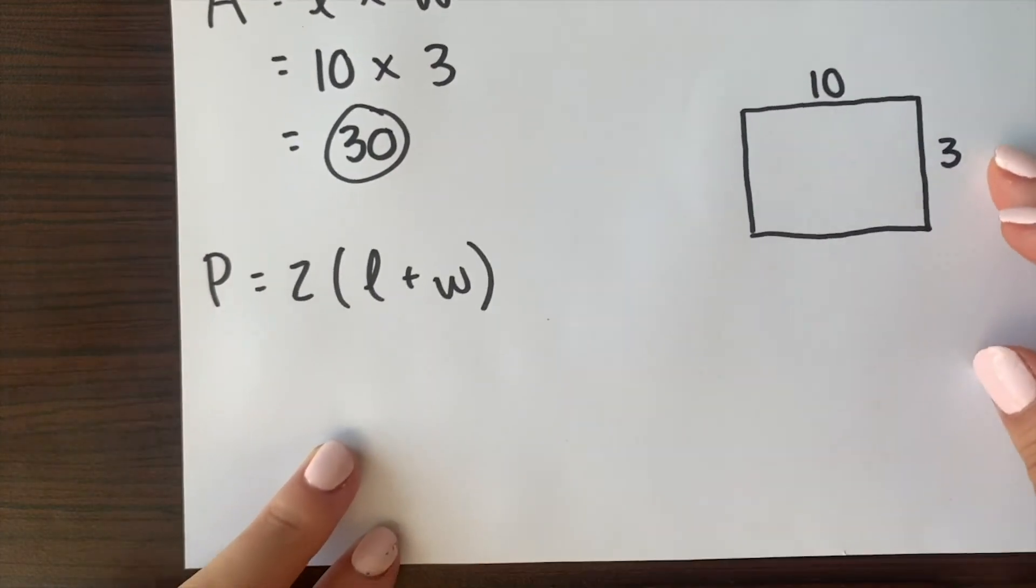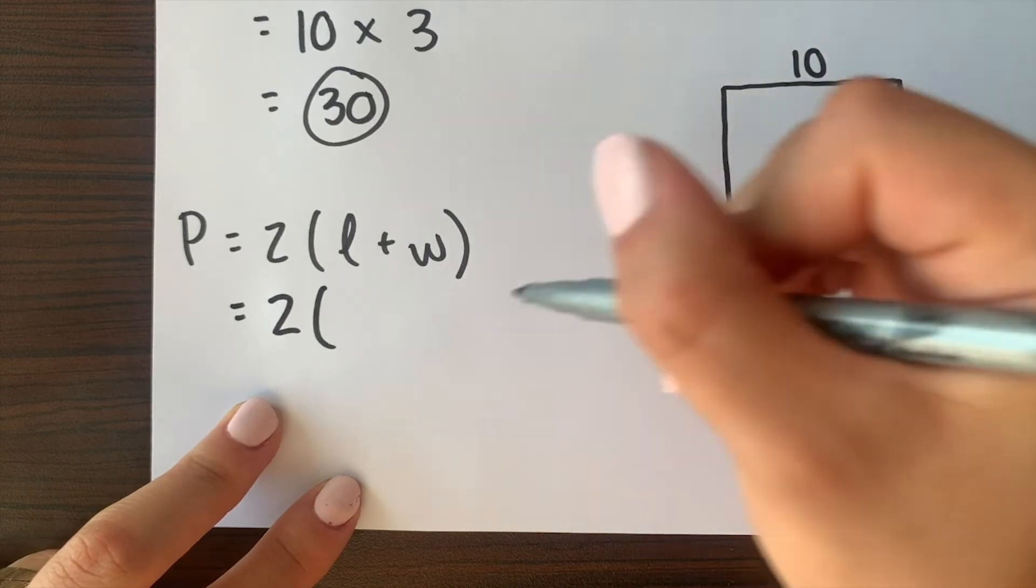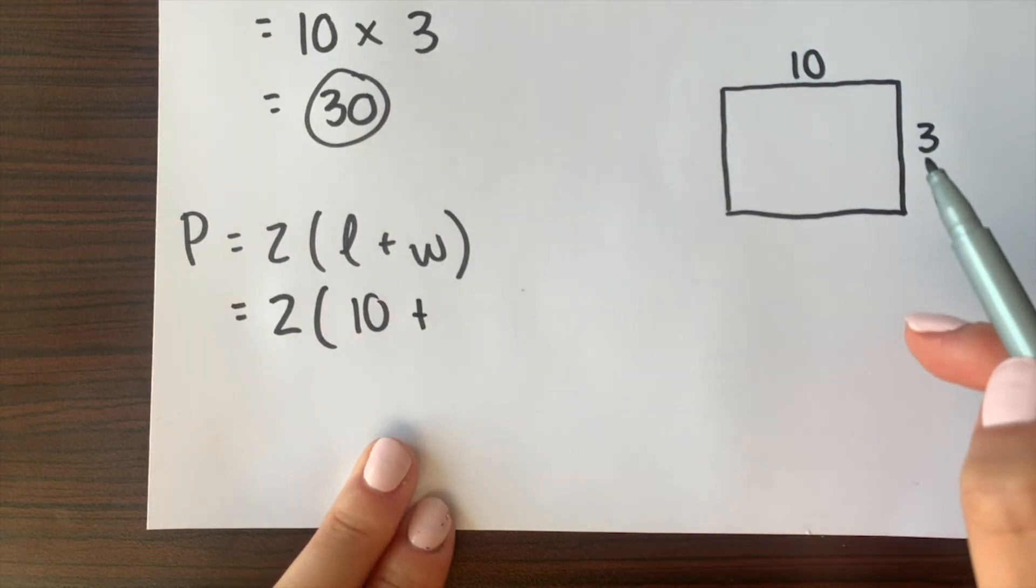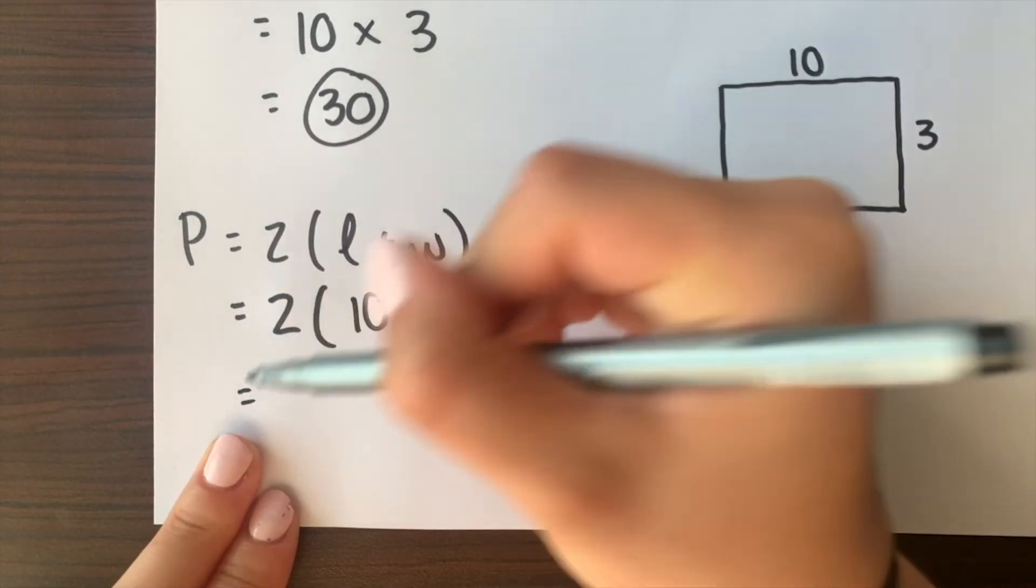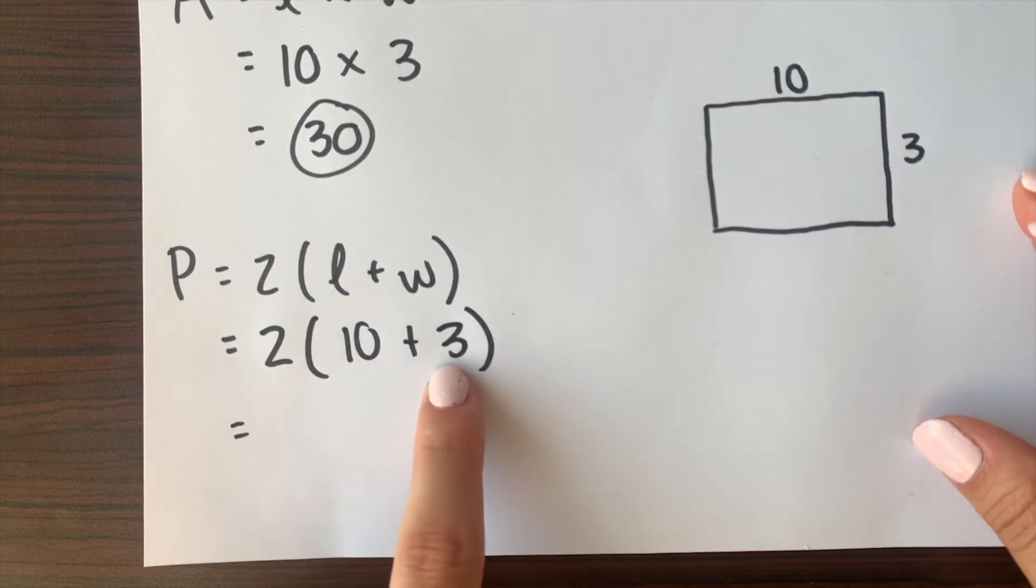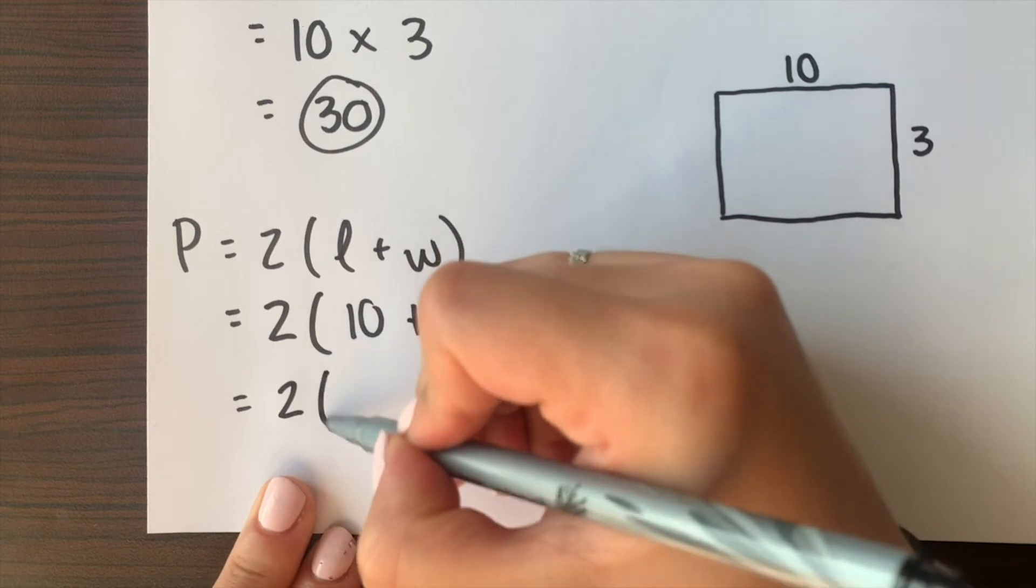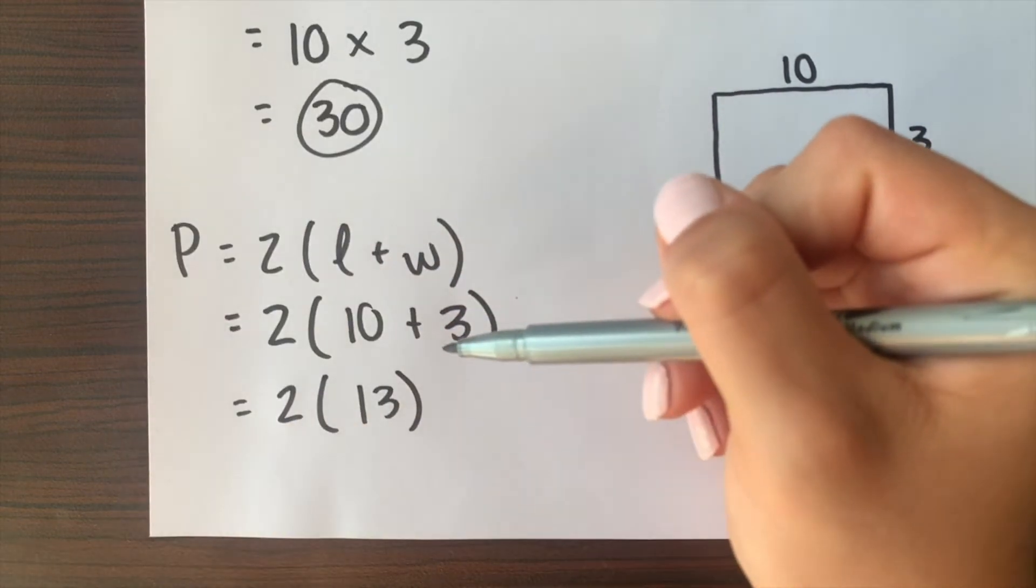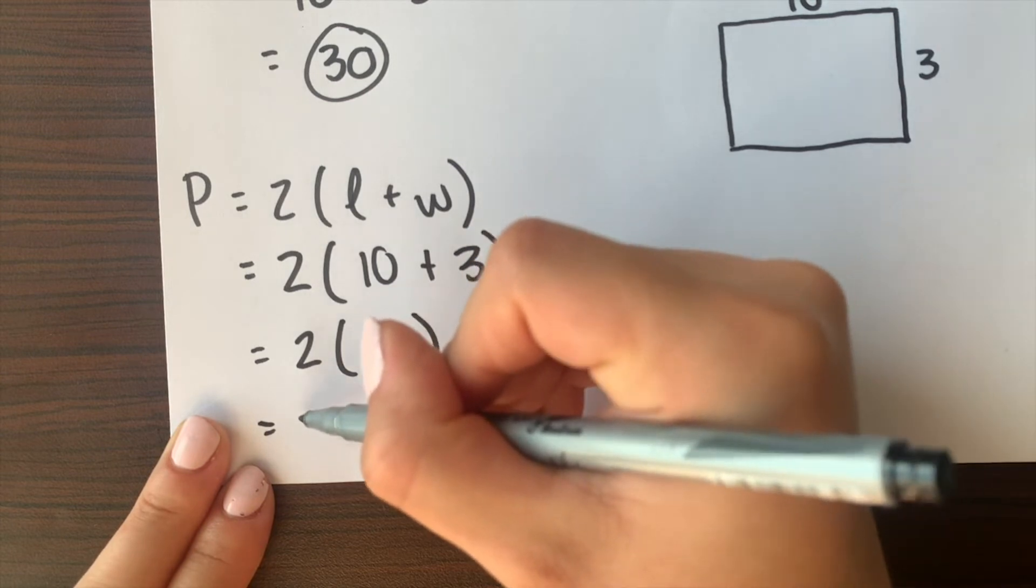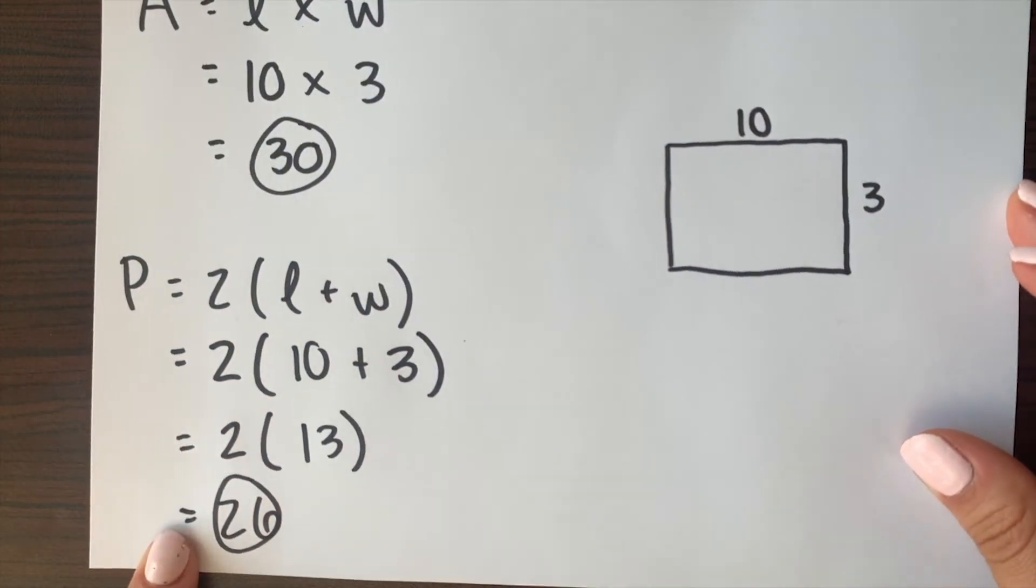Now to find our perimeter again we're gonna go ahead and plug in our numbers. So it's 2 times our length which is 10 plus our width which is 3. So also when doing this keep in mind to use PEMDAS right because you would add what's in the parentheses first and then multiply whatever you get here by the 2. So copy down our 2. 10 plus 3 gives us 13 and 2 times 13 gives us 26. So our area for this rectangle is 30 and our perimeter for this rectangle is 26.